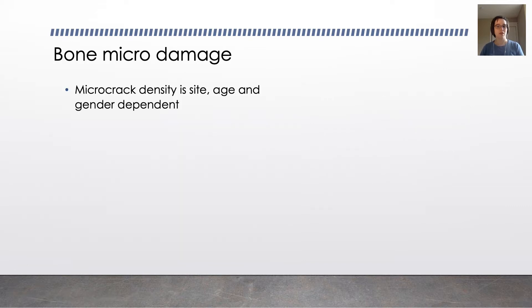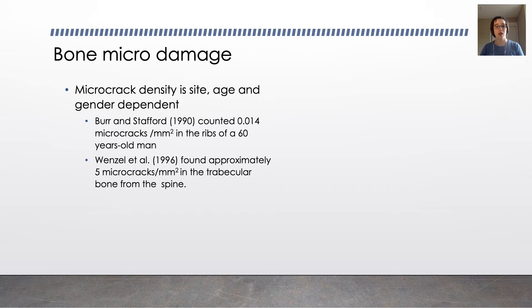Microdamage in bone depends on the site, the age of the person, and the gender of the person. It's obviously pretty difficult to measure this in living people, but a study in 1990 counted 0.014 microcracks per square millimeter in the ribs of a 60-year-old man, and another study in 1996 found approximately 5 microcracks per square millimeter in the trabecular bone from the spine.